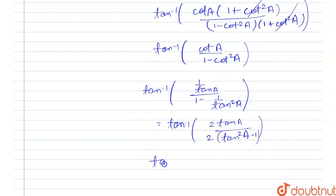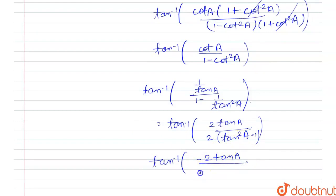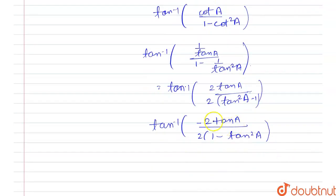This gives tan inverse of (2 tan a) divided by (−1) times (2)(1 − tan²a). Taking out the −1, we get tan inverse of −(2 tan a)/(1 − tan²a). Since 2 tan a / (1 − tan²a) is the double angle formula for tan 2a, we can write this as tan inverse of (−1/2 · tan 2a).